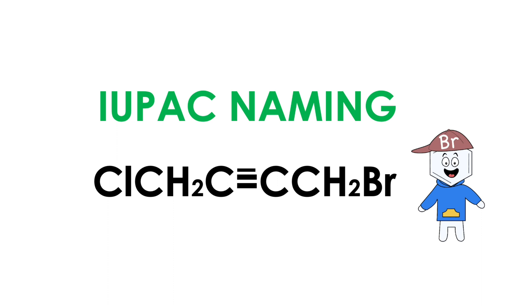Welcome to Aurora Chemistry for everyone. We are here to discuss writing IUPAC name for the given compound ClCH2C triple bond CCH2Br halogen compound.